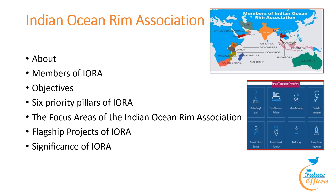Under international organizations, the Indian Ocean Rim Association (IORA) is an intergovernmental organization established on 7th March 1997, formerly known as the Indian Ocean Rim Initiative and the Indian Ocean Rim Association for Regional Cooperation. The IORA secretariat is based in Mauritius. It became an observer to the UN General Assembly and the African Union in 2015. It has 23 member states and 11 dialogue partners, with membership open to all littoral states of the Indian Ocean Rim. China is a dialogue partner.